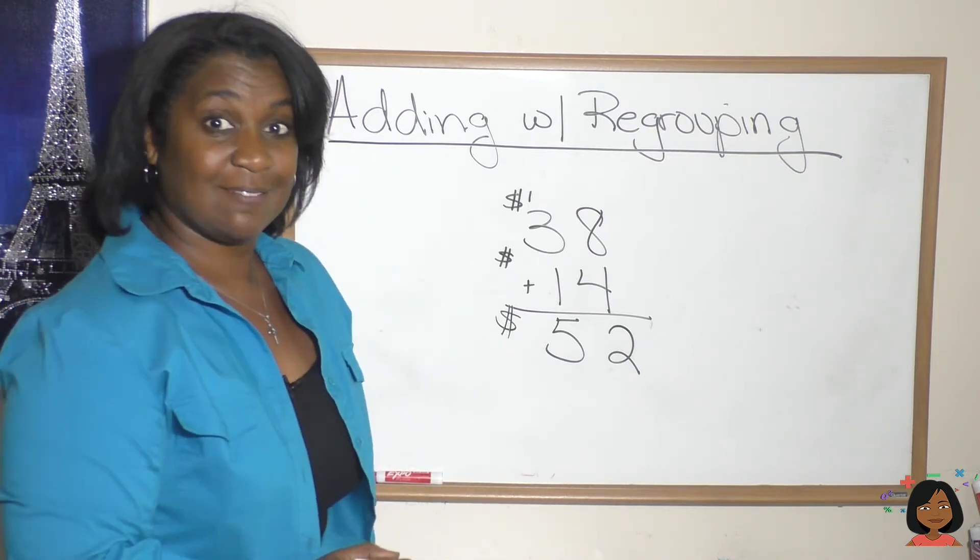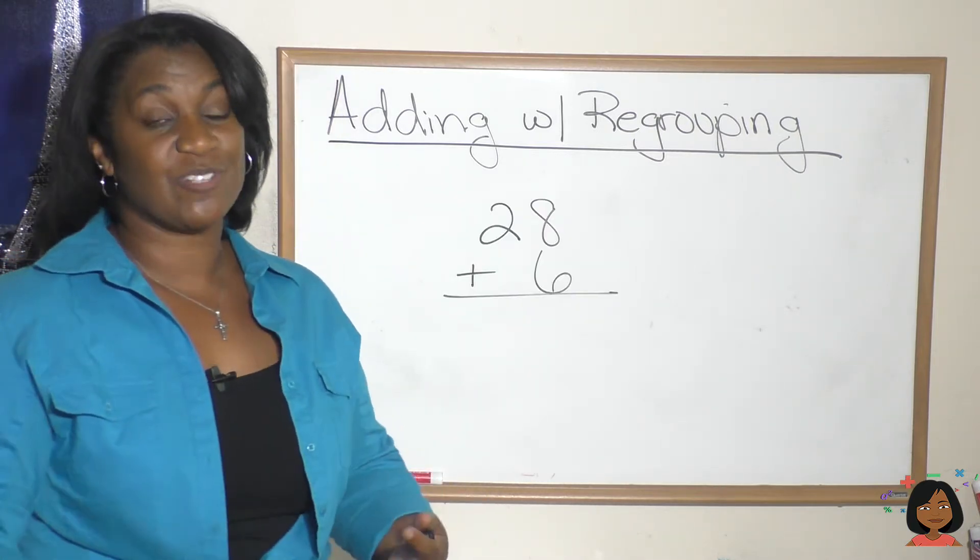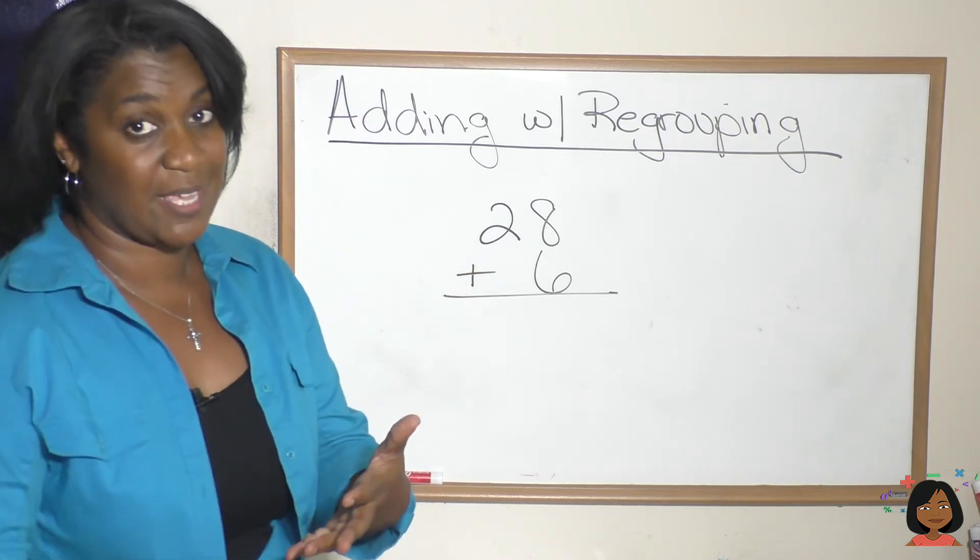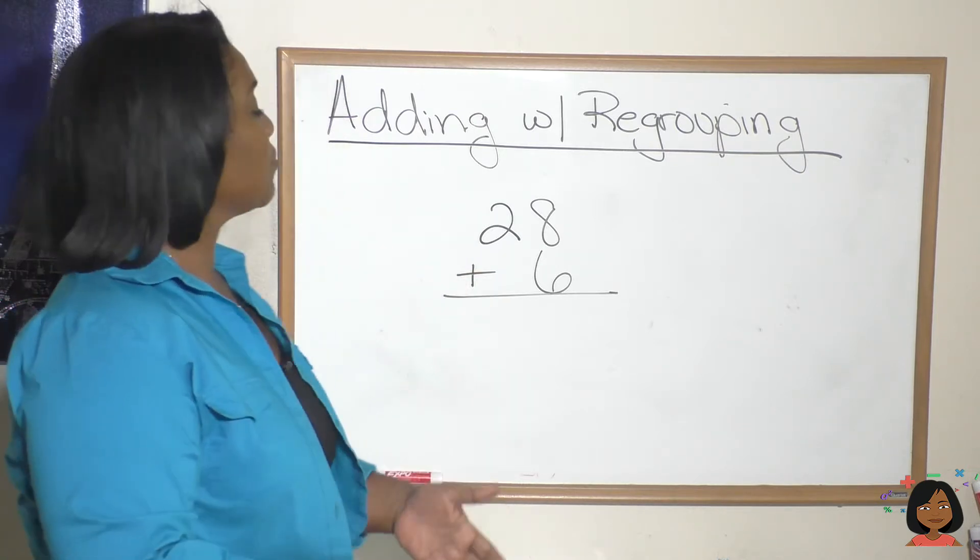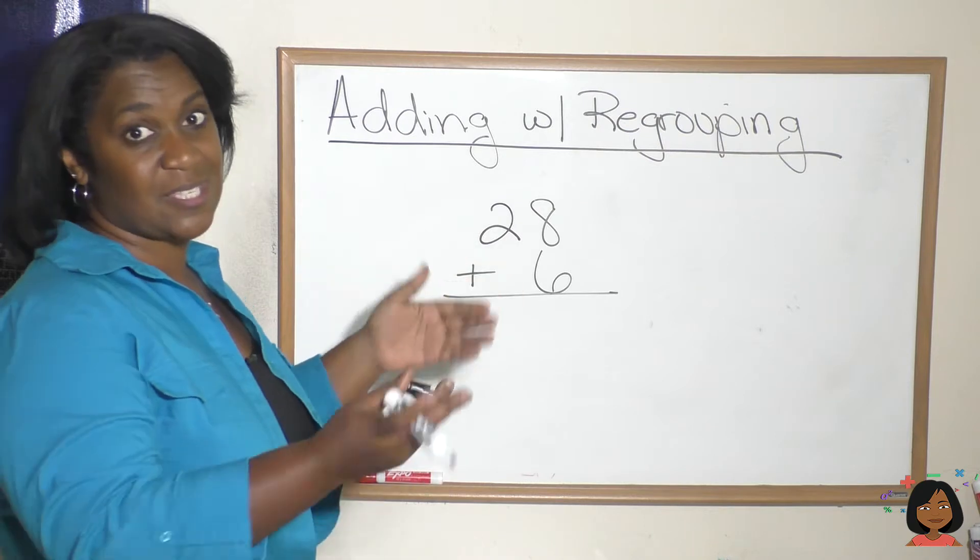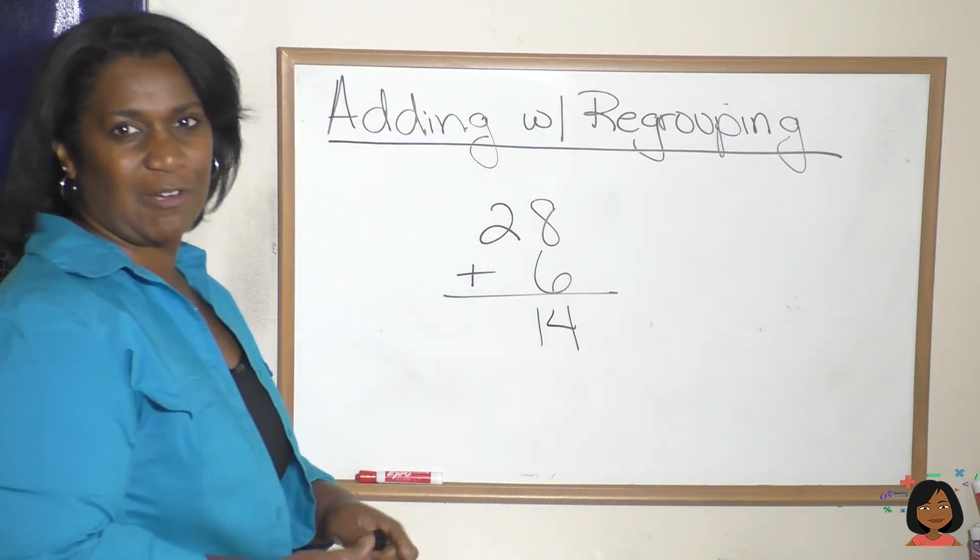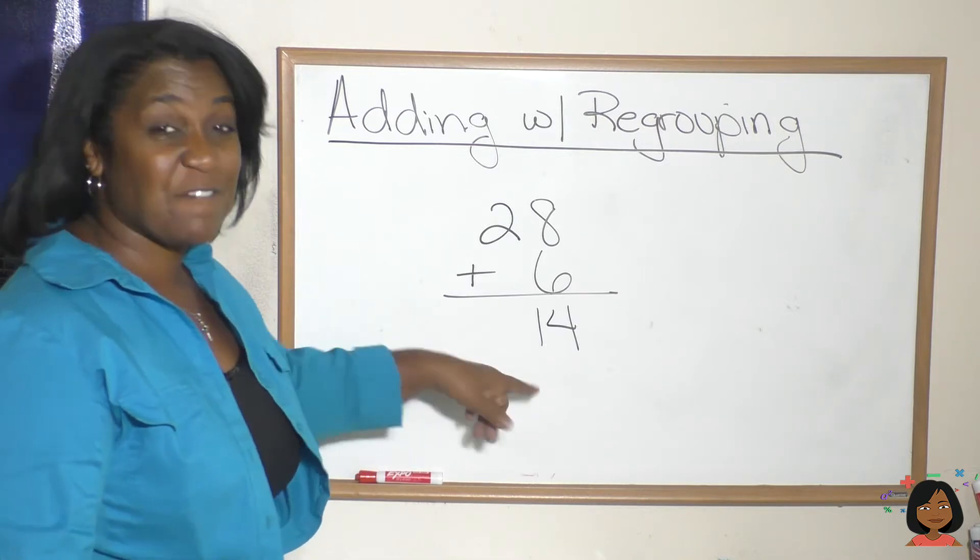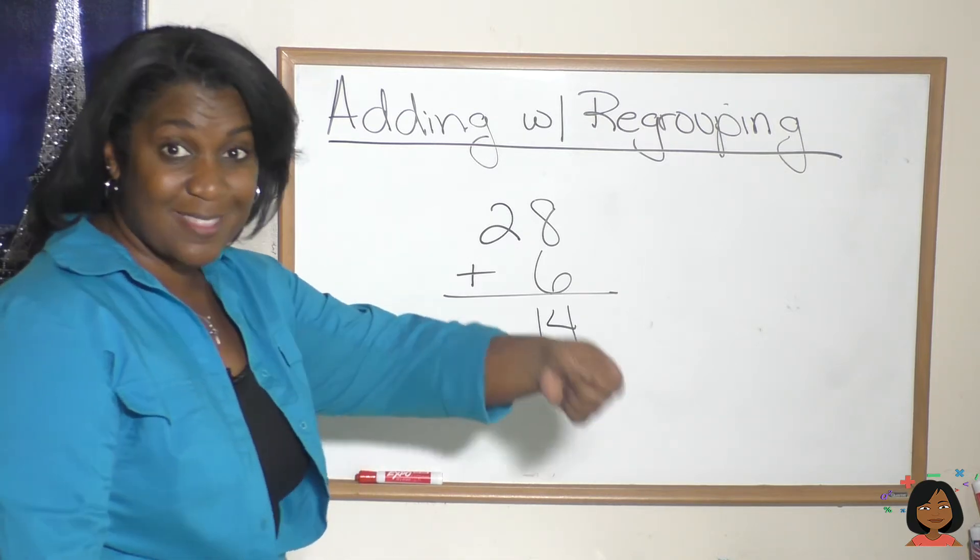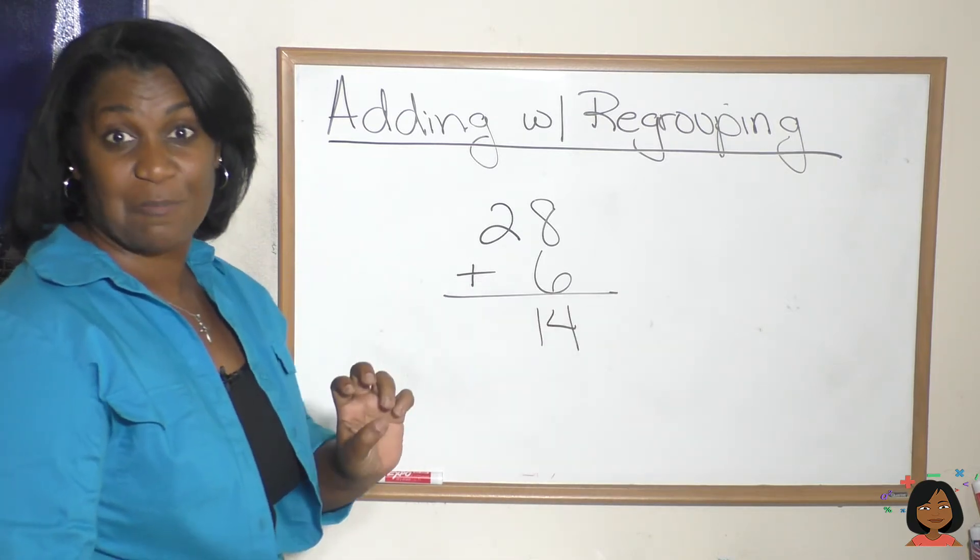Let's try it again. This time let's try it without dollars. So here we have twenty eight plus six. Eight plus six is fourteen. So I'm gonna just write that fourteen temporarily. But I want to take ten of my one dollars, turn it into the banker, and get a ten dollar bill in its place.